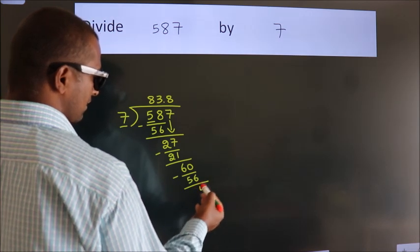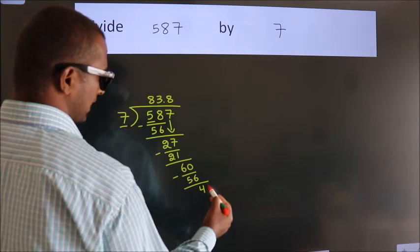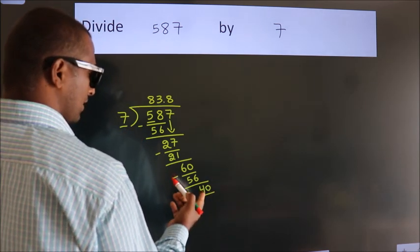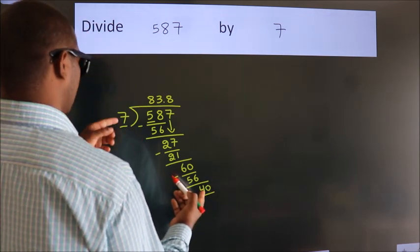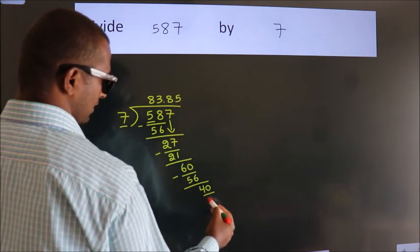After this we already have the decimal, so directly take 0, giving us 40. A number close to 40 in the 7 table is 7 times 5 equals 35.